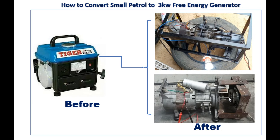I've discussed this over and over again. I told you in one of my previous videos that the generator has two sections: it has the electrical section and it has the mechanical section. It is not the oil or petrol that you put in the generator that makes it produce electricity. What the fuel does is help to rotate the coils inside the electrical section. In the free energy generator design, to do the conversion, what you have to do is dismantle the electrical section and remove it.